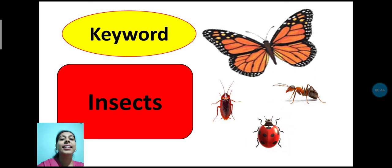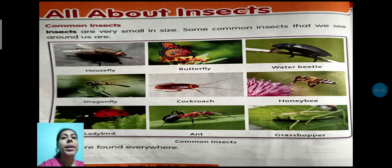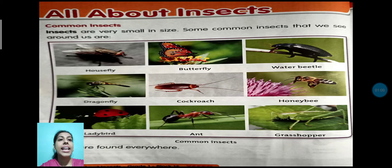First we read page number 94. So open your English content book at page number 94. All About Insects — Common Insects. Insects are very small in size. Insect size में बहुत छोटे दिखाई देते हैं. Some common insects that we see around us — common insects जो हमें हमारे चारों तरफ दिखाई देते हैं, कौन से होते हैं?